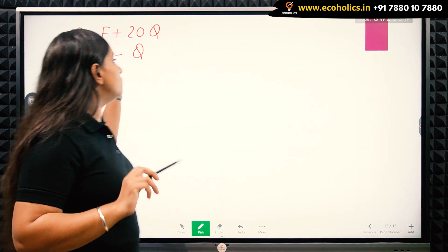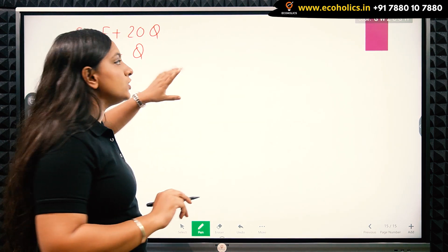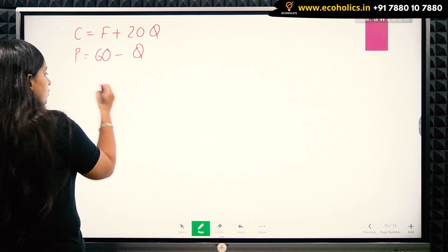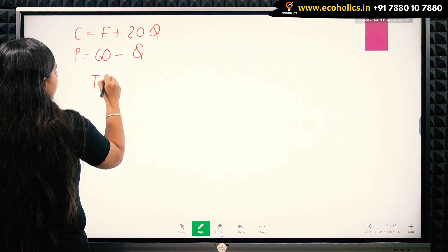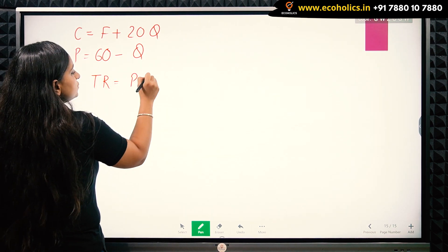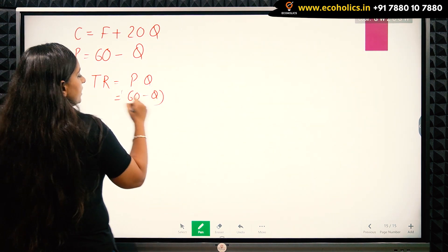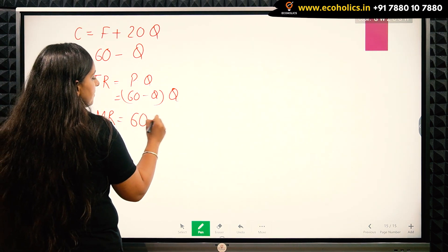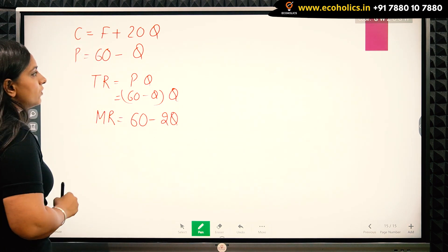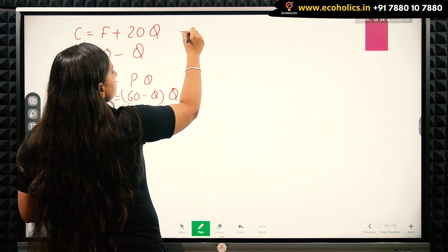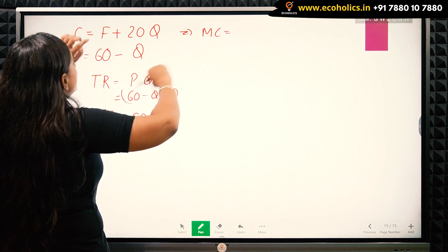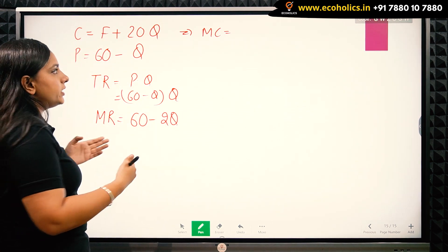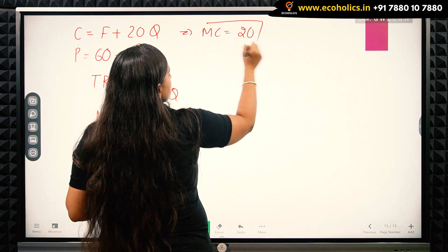From the inverse demand function, I first need to find total revenue so I can find marginal revenue, and also find marginal cost. Total revenue is P times q, which equals (60 − q) times q. So marginal revenue is 60 − 2q. For marginal cost, since F is fixed cost it never changes with quantity, so marginal cost is just 20.